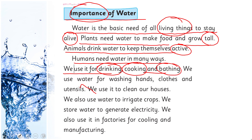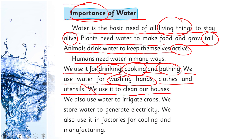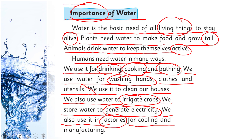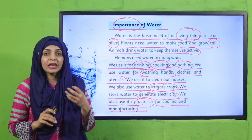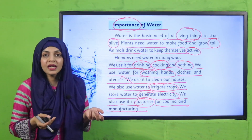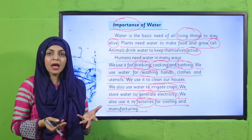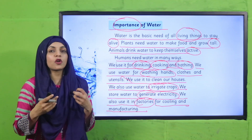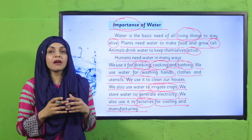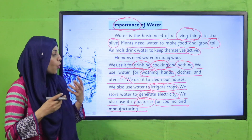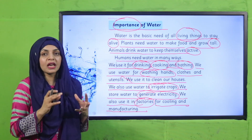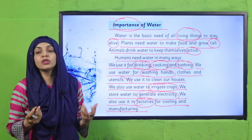'Humans need water in many ways. We use it for drinking, cooking, and bathing. We use water for washing hands, clothes, and utensils. We use it to clean our houses. We also use water to irrigate crops. We store water to generate electricity. We also use it in factories for cooling and manufacturing.' On a daily basis you can see how many places water is used — even in dams, water is stored and released from great height to generate electricity.